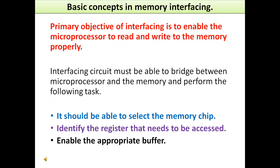The first thing the interfacing circuit should do is be able to select the memory chip and identify the register that needs to be accessed. The memory is a collection of registers, and any particular register, which is a collection of flip-flops, corresponds to a memory address. The interfacing circuit should be able to provide a way of identifying the register to be accessed, either for writing or reading from that particular location. It also enables the appropriate buffer.